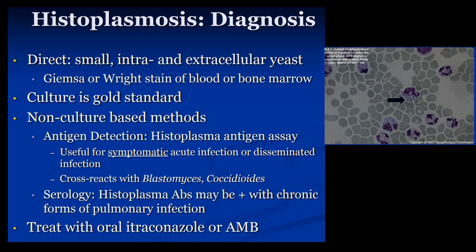So how do we diagnose histo? It can be pretty difficult to diagnose — the key is keeping it on your differential, thinking of it, and seeing if the patient meets the right criteria. One way is looking for the fungi itself: taking a sample like lavage fluid, lung biopsy, or blood in a disseminated case, and looking for the small yeast forms — either intracellular or extracellular. Culture is the gold standard.